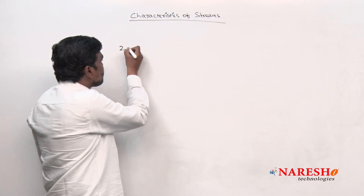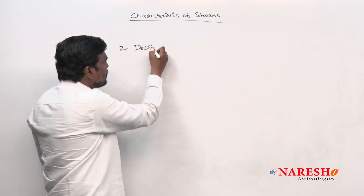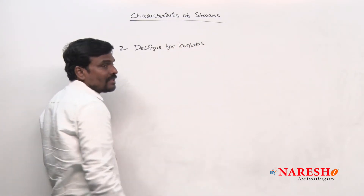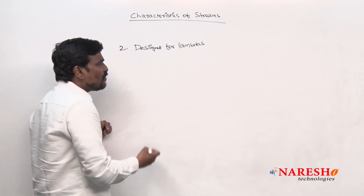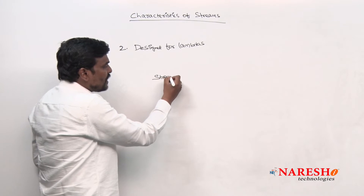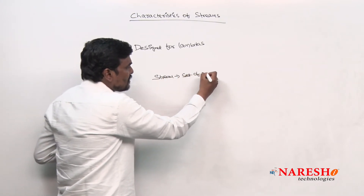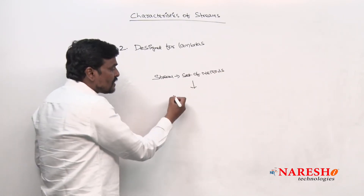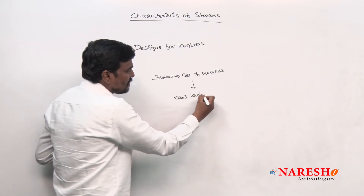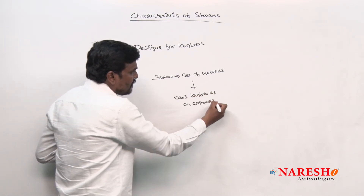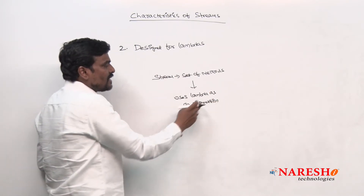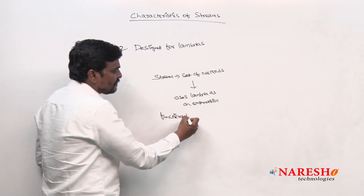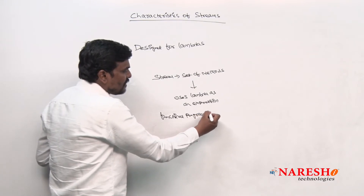The second characteristic of a stream is that streams are designed for lambdas. Every function provided by a stream uses lambda as an expression. All the methods of stream use lambda expressions, meaning streams use functional programming — stream supports functional programming.